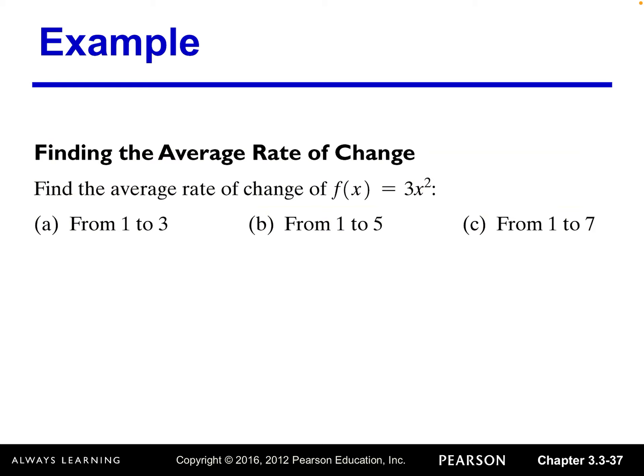Now let's try an example. Find the average rate of change of f(x) = 3x². We want to evaluate function values because we're looking for the average rate of change from 1 to 3, then from 1 to 5, and then from 1 to 7.